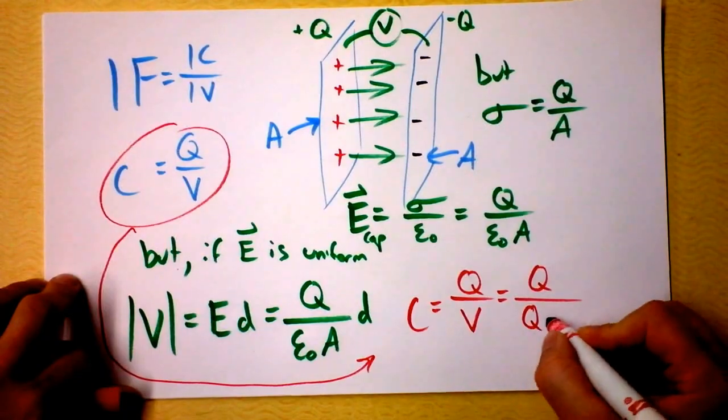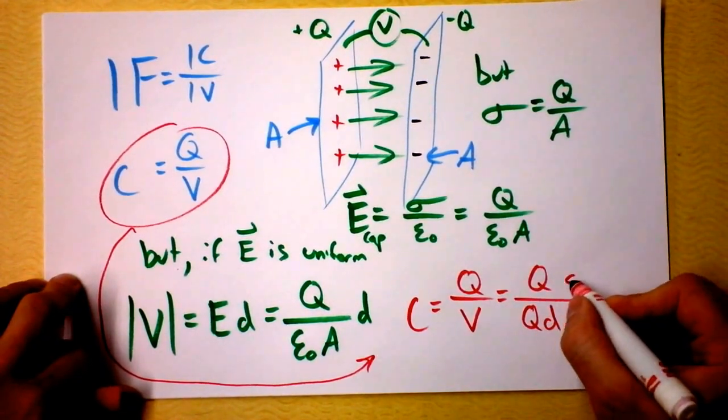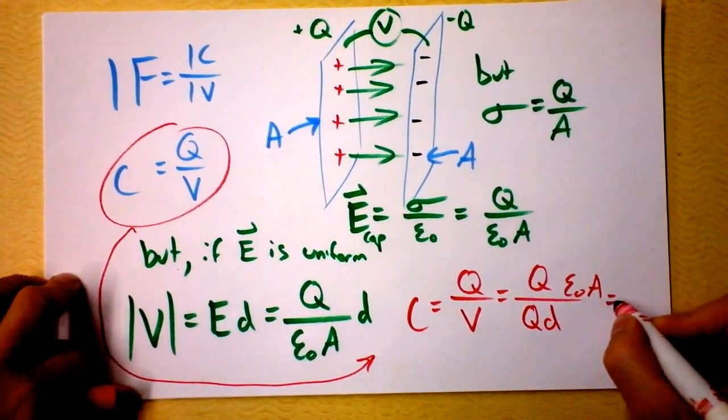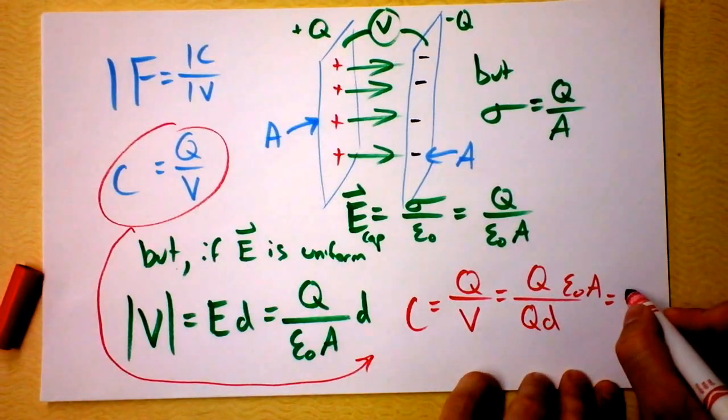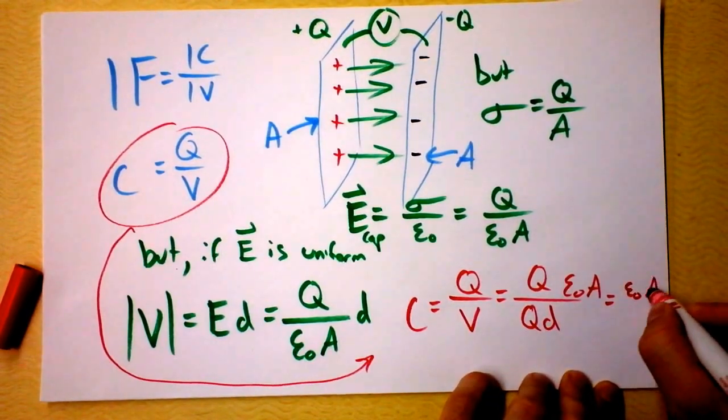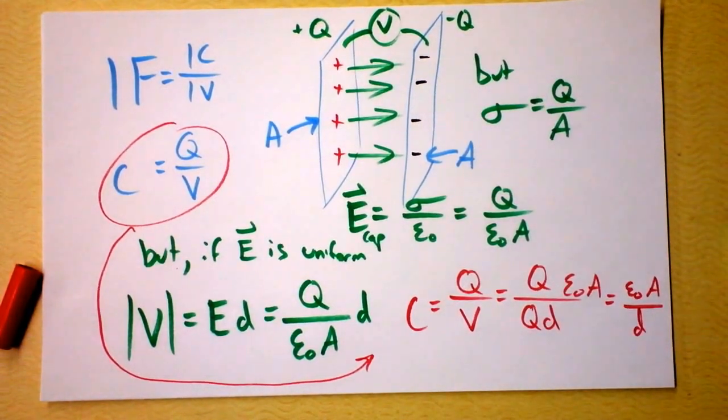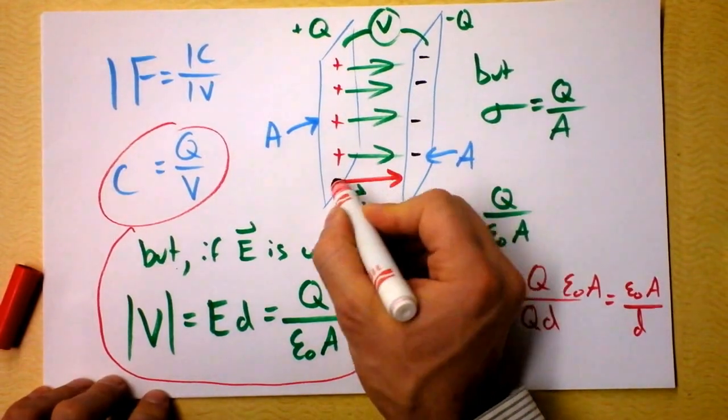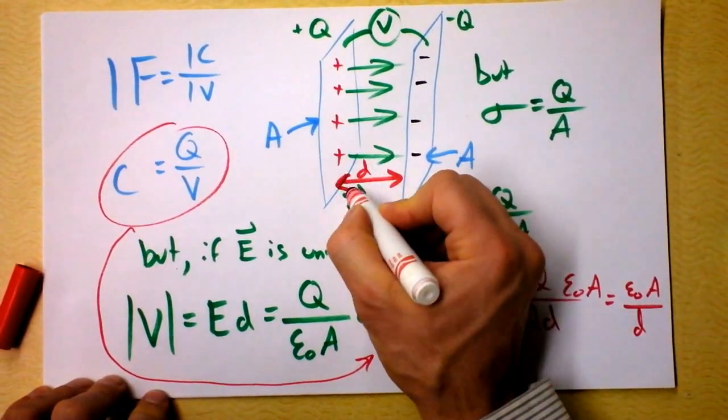Wow! I've got to divide by Q times D and multiply by epsilon naught times area. The Qs cancel out, and I get epsilon naught times the area of the plates divided by the separation between the plates. That's our distance D right there.